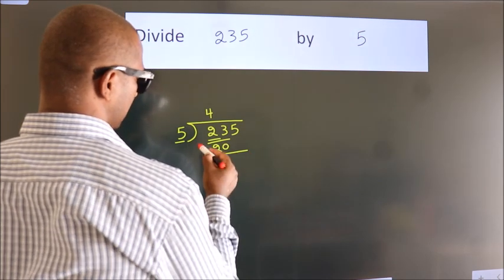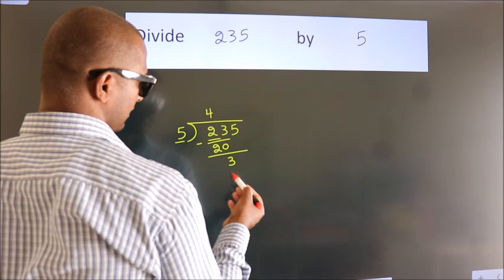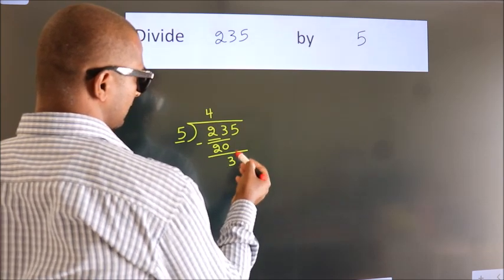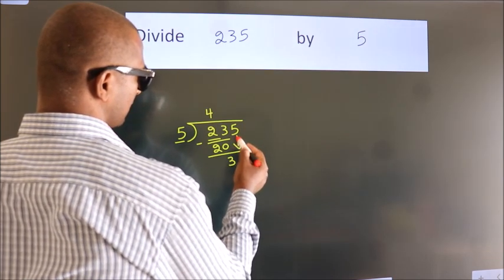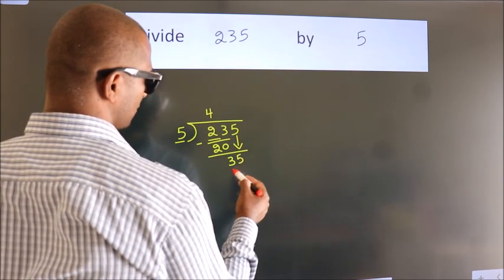Now we should subtract. We get 3. After this, bring down the beside number, so 5 down. So 35.